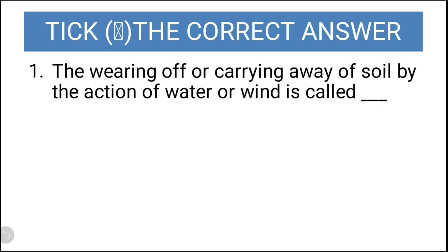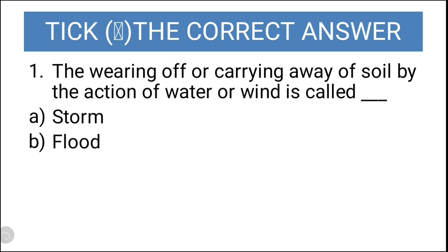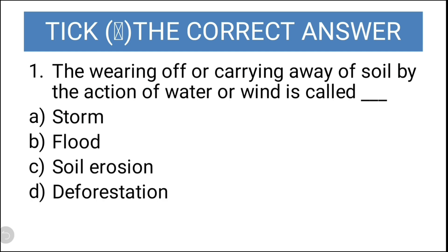making terraces on hills, and building embankments along river banks. Now let us take the correct answers. The first question is: wearing off or carrying away of soil by the action of water or wind is called — storm, flood, soil erosion, or deforestation?